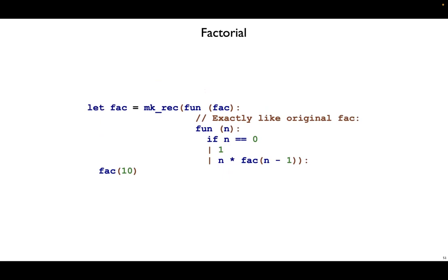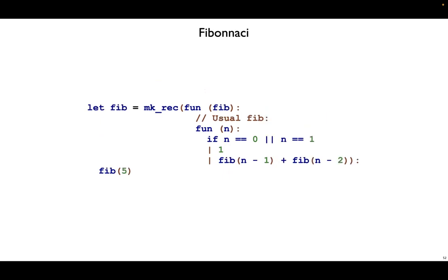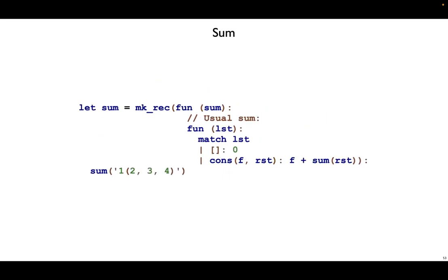So this is our recursive factorial. Here's a recursive Fibonacci. Here's a sum function. And now we can go on and on like this. We've got a Turing-complete lambda calculus language.